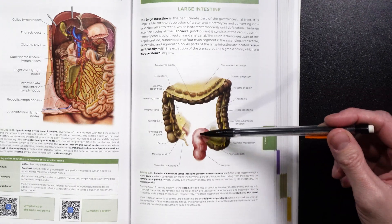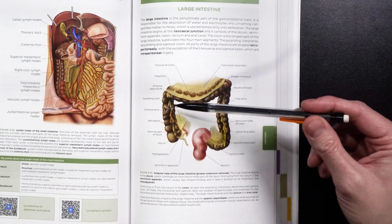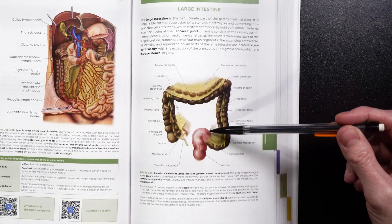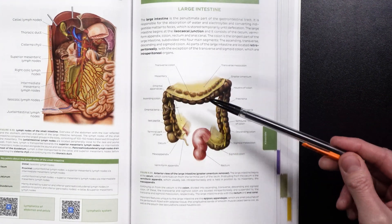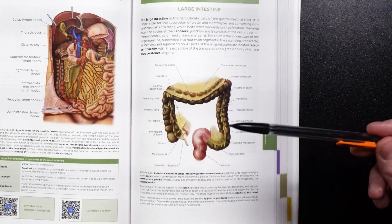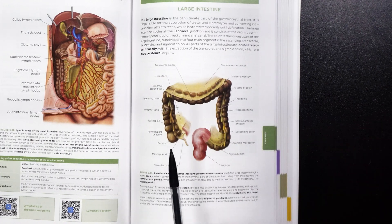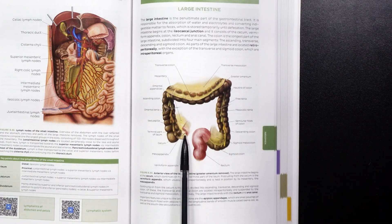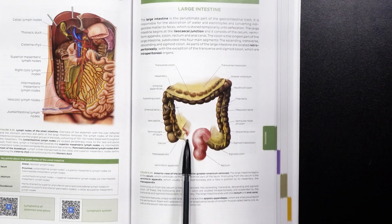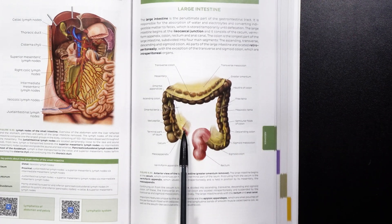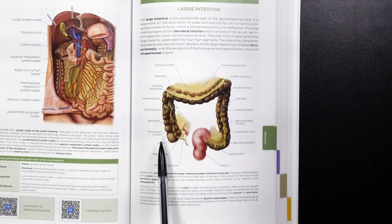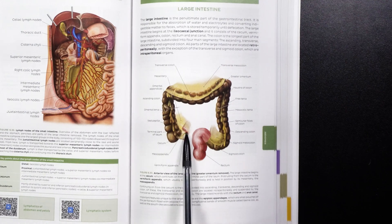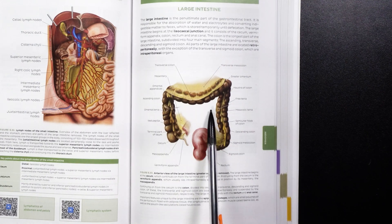You see this empty space here — the small intestine is located in here. So that's going to be your duodenum, your jejunum, and your ileum. We can even see this little pink part right here. This is the terminal part of the ileum — the end of the small intestine.